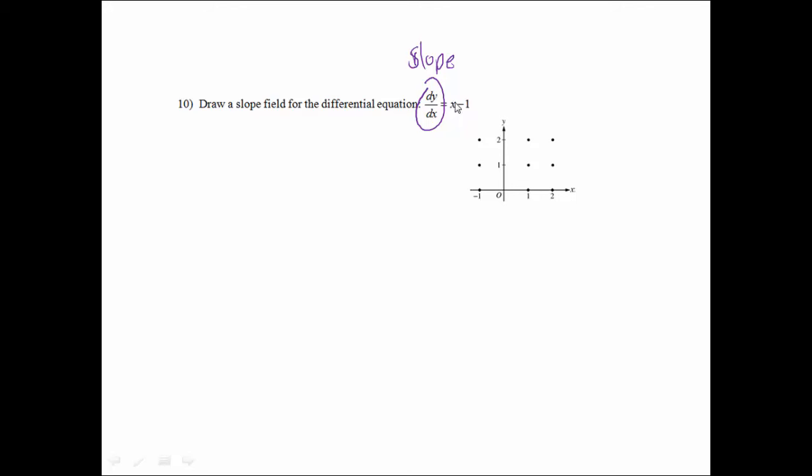I'm going to start with x values because the slope is dependent on just the x value. I notice that when x equals 1, the slopes will equal 0. So whenever x equals 1, I can draw lines that have slope of 0, and then I'm just going to go on either side.